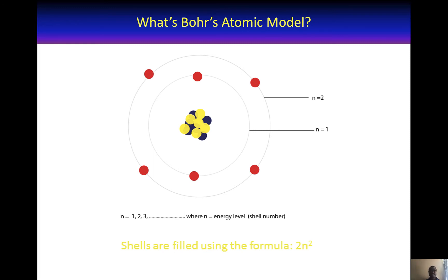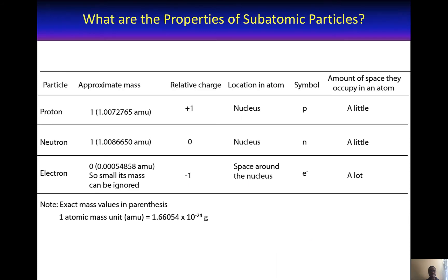Let's now look at the properties of these three subatomic particles summarized in this table. The table includes: particle, approximate mass, relative charge, location in atom, symbol, and amount of space they occupy in an atom. The first particle is the proton.